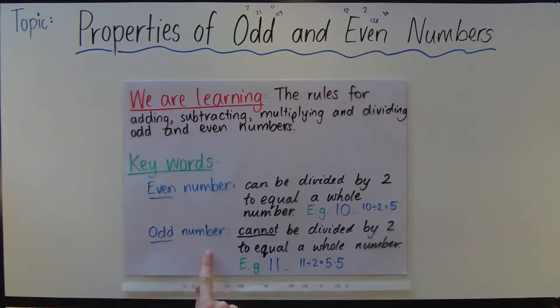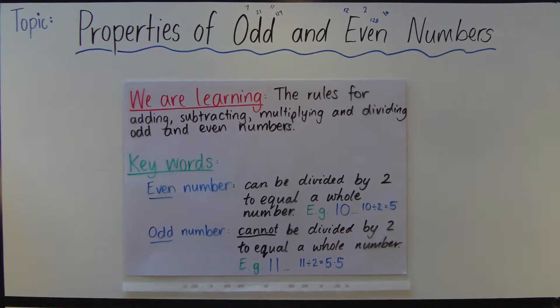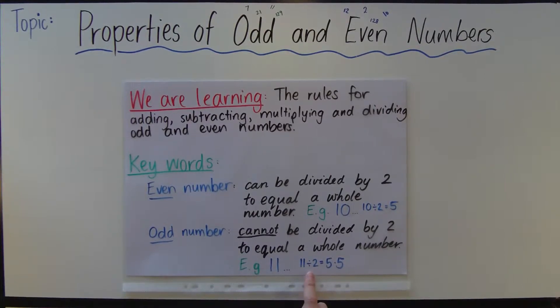An odd number is a number that cannot be divided by 2 to equal a whole number. An example would be 11, and that is because 11 divided by 2 is 5.5, and that is definitely not a whole number. So 11 is an odd number.